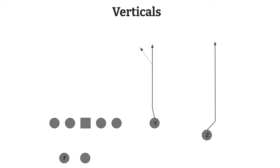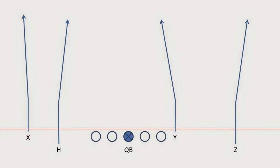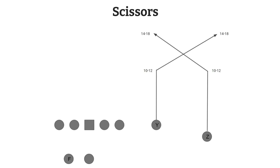You might have heard the term four verticals — that's exactly what it is: four wide receivers in a two by two formation all running down the field. Now looking at three other concepts from two wide receiver sets: first is scissors. Two wide receivers both run 10 to 12 yards straight off the line of scrimmage, then cut inward toward each other for another 14 to 18 yards. The idea is to potentially cause cornerbacks to collide or to split a safety who has to choose between the two routes.